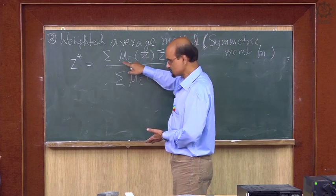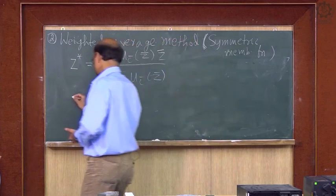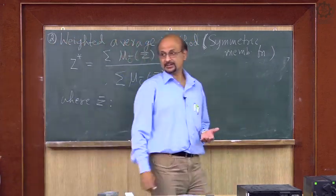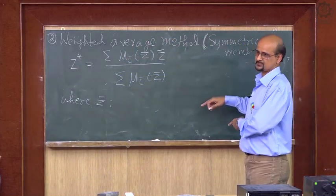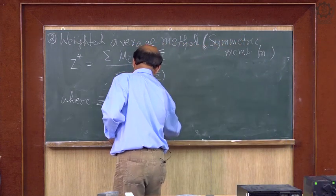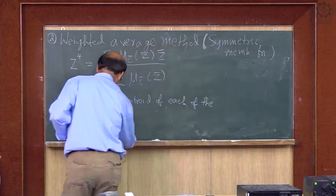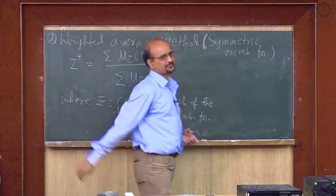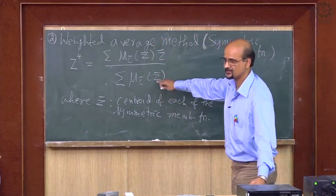Here z-bar is the center or centroid of each of the membership functions. It is the centroid of each symmetric membership function. It is easier to find the centroid if the membership function is symmetric.